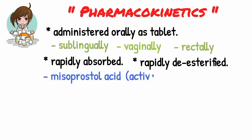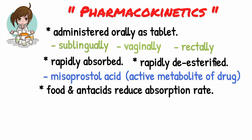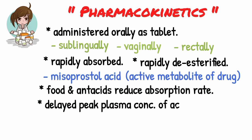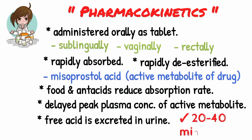Misoprostol acid is the principal and active metabolite of the drug. Food and antacids decrease the rate of misoprostol absorption, resulting in decreased and delayed peak plasma concentration of the active metabolite. The free acid is excreted mainly in urine with an elimination half-life of about 20 to 40 minutes.